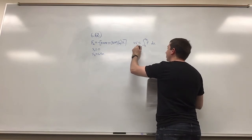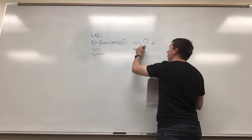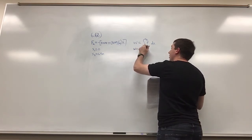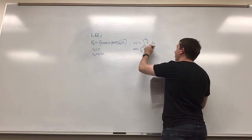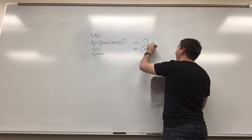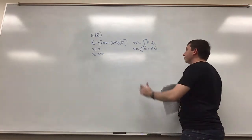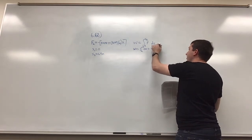W is going to be equal to the integral from x1 to x2 of negative 20 plus 30, or 3, times x times dx.